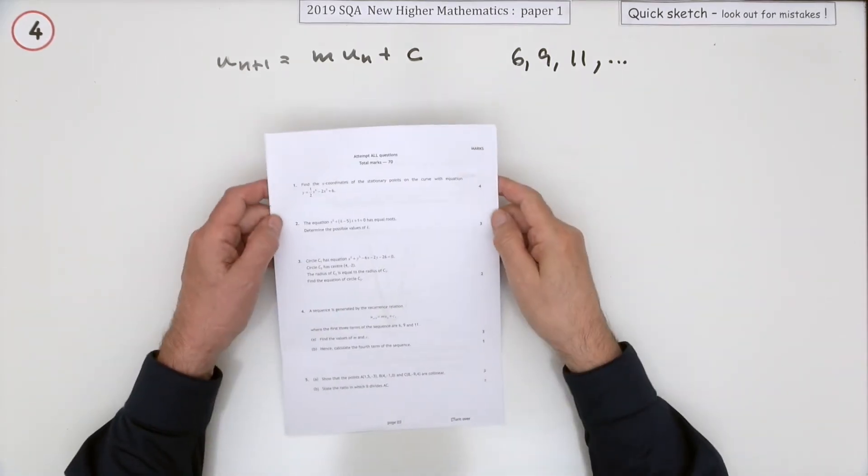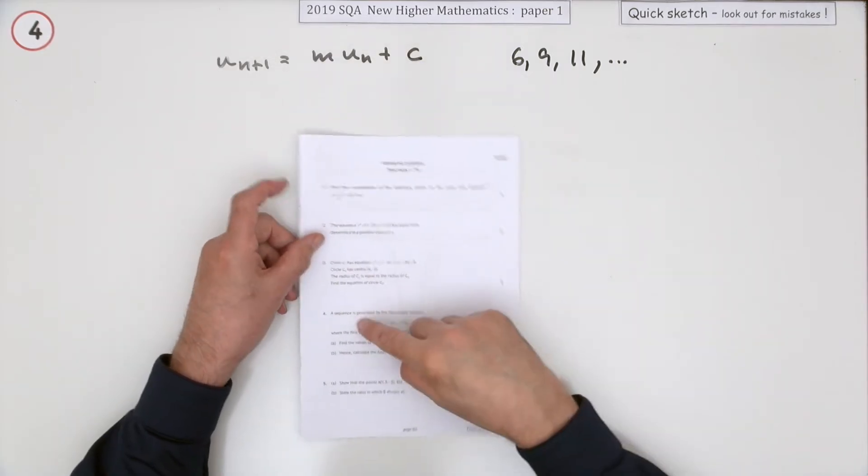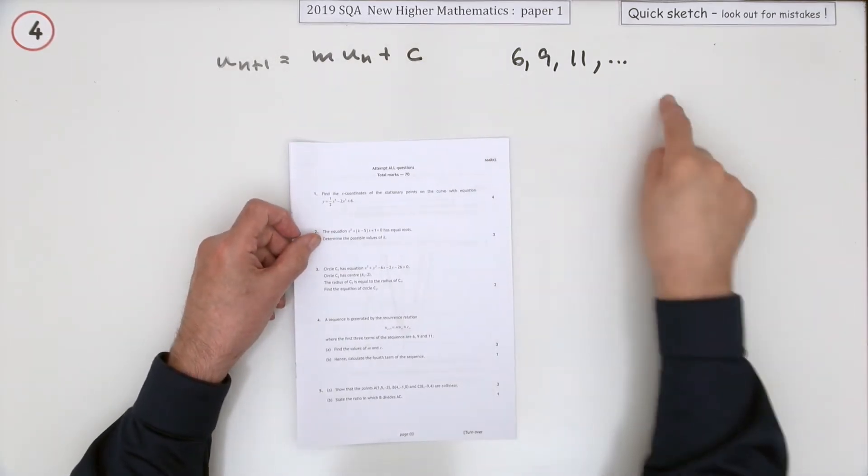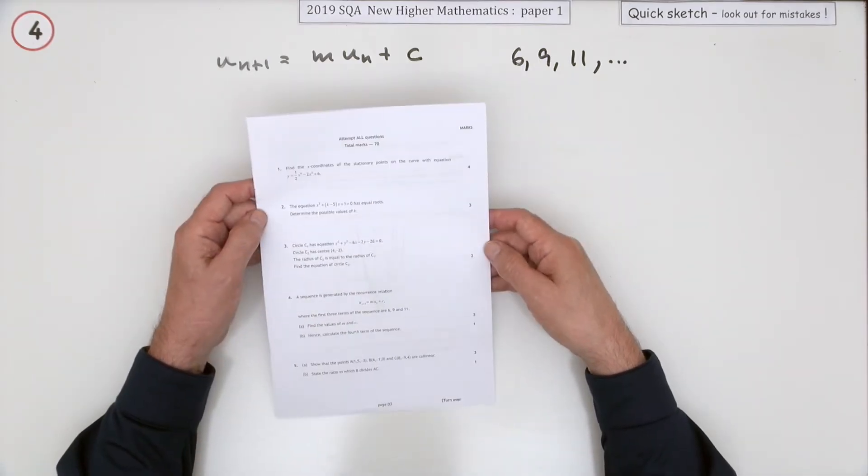Number four from the 2019 New Higher Maths Paper. One format question here: recurrence relations. Well, it's really a sequence that's described by a recurrence relation, but you normally just call them recurrence relation questions.